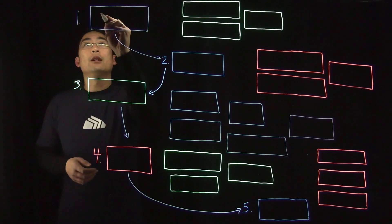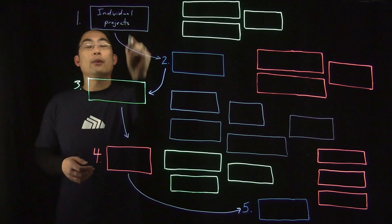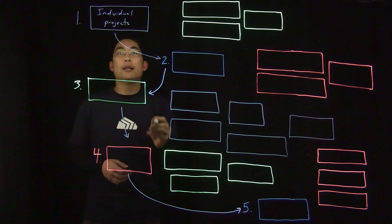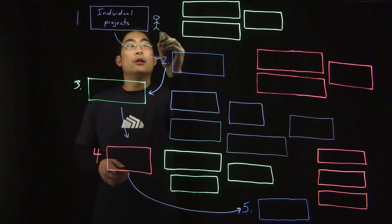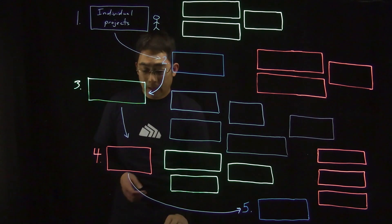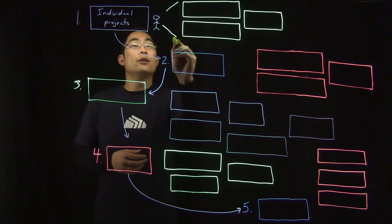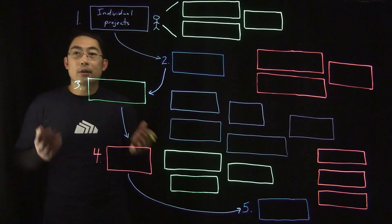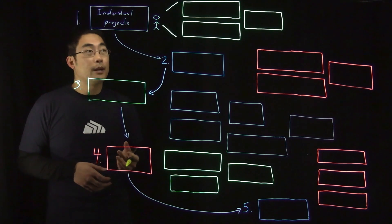The first stage is really about individual projects. At this stage, individual developers are learning and experimenting with containers and they're building container images, probably Docker images, on their local machines. The images are probably not being used to launch containers in production. The apps are relatively simple.